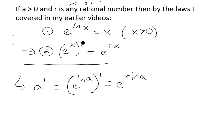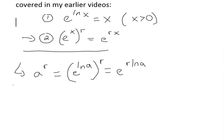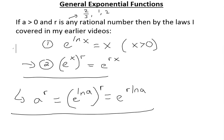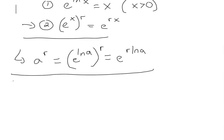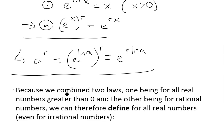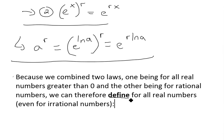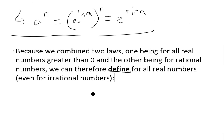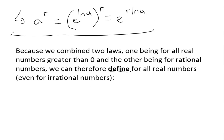Since one law holds for all real numbers and the other for rational numbers, we can combine them and define this to be true for all real numbers. We'll prove it later, but we can replace r with x and write: a to the x equals e to the x·ln(a), extending the definition beyond just rational numbers.